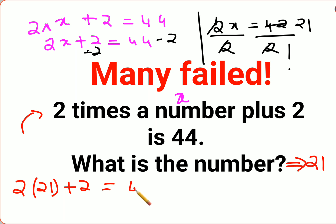2 into 21 is 42 plus 2 gets you 44. And this is what they were saying in the question also. So here we can say the value of this number is supposed to be 21.